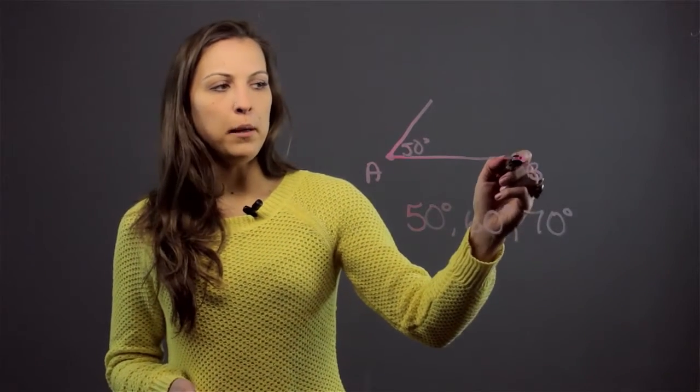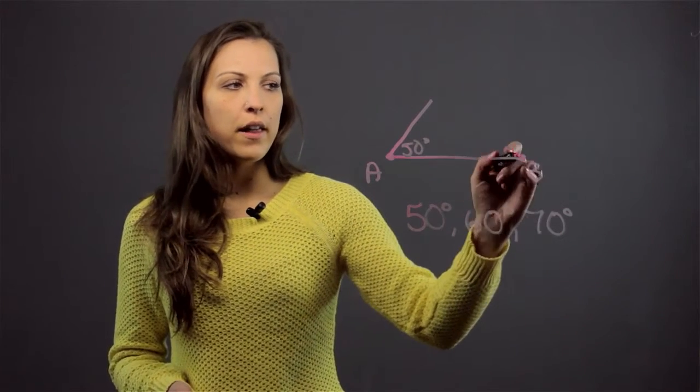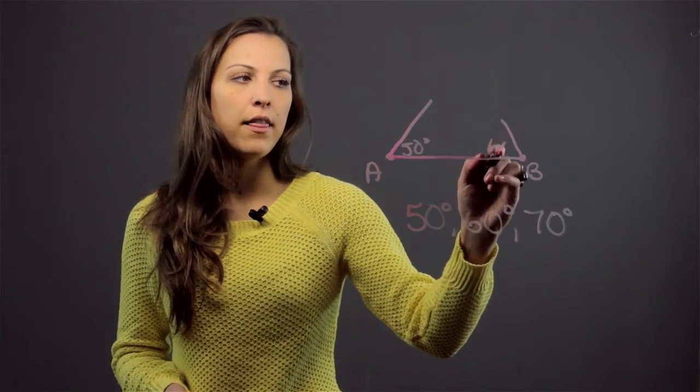Then you'll come to point B and using point B as the vertex of another angle and your protractor, you'll create an angle that is 60 degrees. So approximately like this.